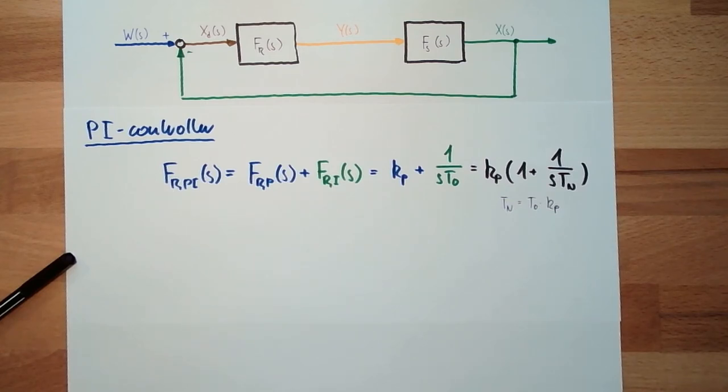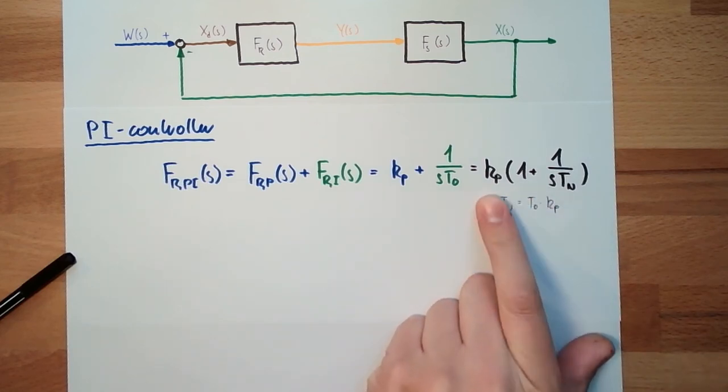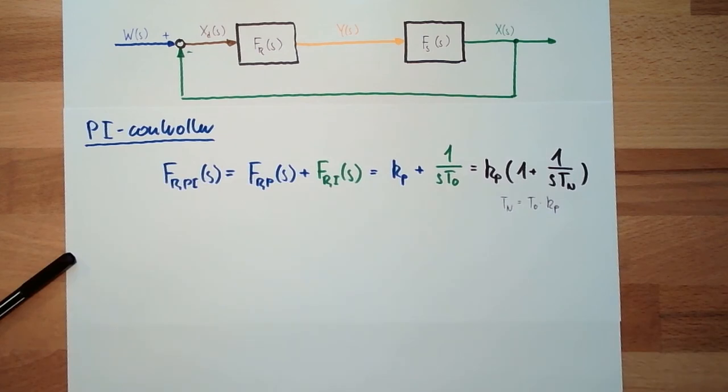Our first combined controller, two things usually adjustable, K_P and T_N. Advantage is clear, combines the advantage of a PI-controller. Sometimes leads to instability.